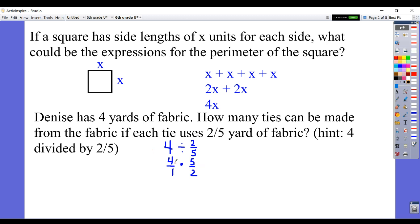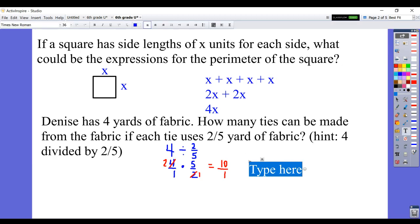Then we multiply as usual, which means we can simplify before we multiply. So 4 and 2 can both be divided by 2. 4 divided by 2 is 2. 2 divided by 2 is 1. And then we get 2 times 5, which is 10, over 1 times 1 is 1. So our final answer would be 10 over 1, which is the same as 10. Since they're asking how many ties, it would be 10 ties.